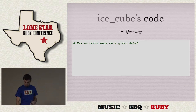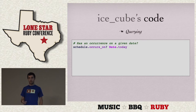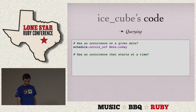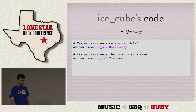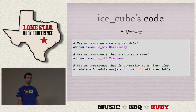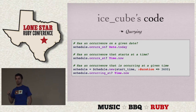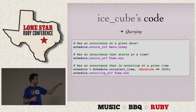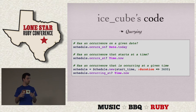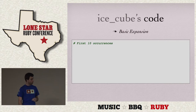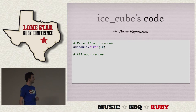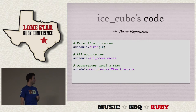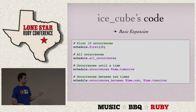How can we use IceCube? We can ask does this schedule have an occurrence on a single date — occurs_on? You can ask if a rule occurs at a given time. And if your schedule has a duration, you can ask if the schedule has an event occurring_at a given time — if the query time falls within the seconds of the start date of that event, this will return true. There's also basic expansion: first(10) occurrences, all occurrences, all occurrences until a time, or all occurrences between two times.